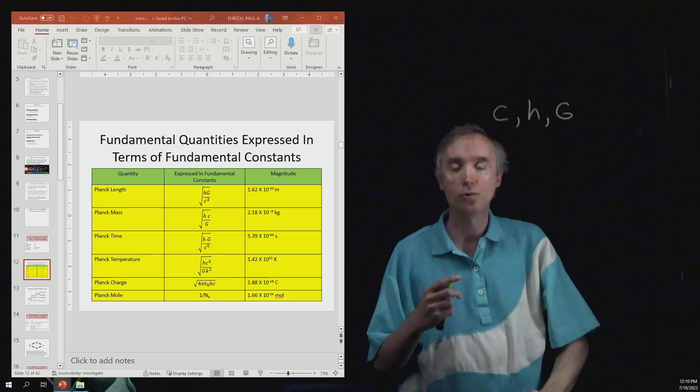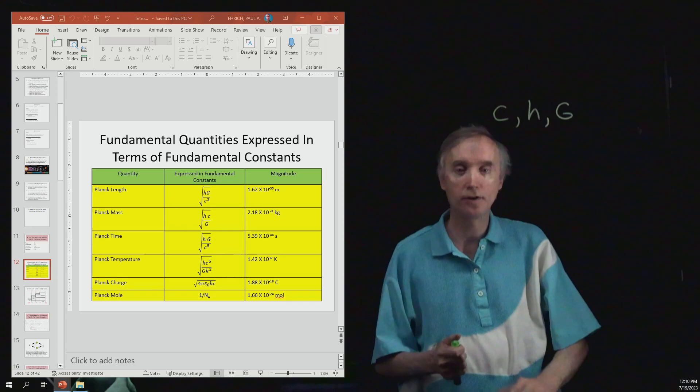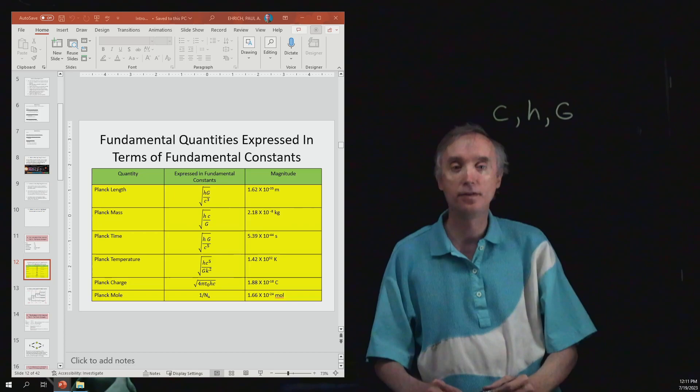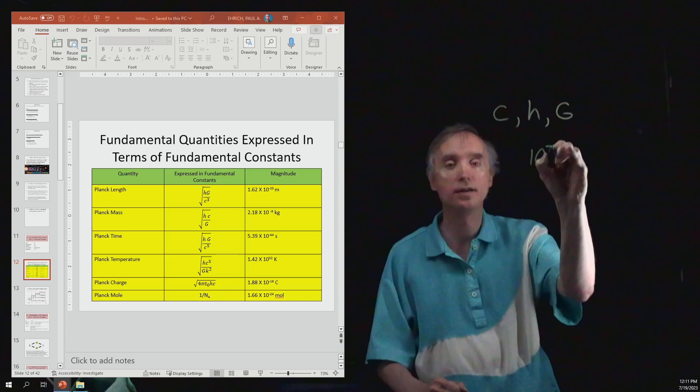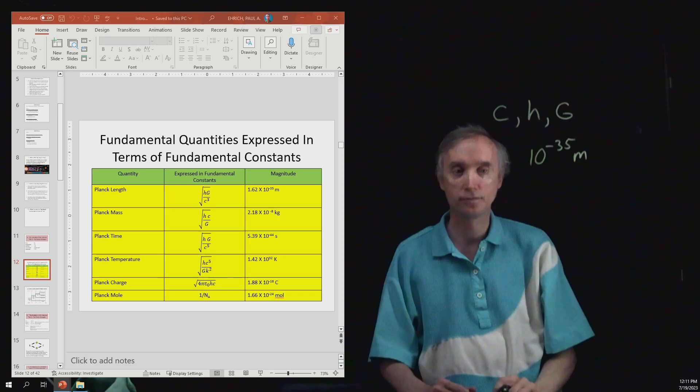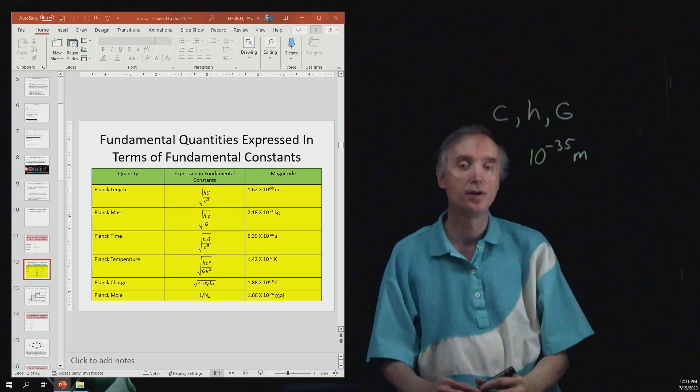By taking various combinations of these fundamental constants, they were able to come up with fundamental quantities in the metric system. Notice that very first one is called Planck length, and you will see that it is approximately 10 to the negative 35th meters across. Now keep that number in your head as we continue.